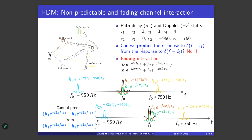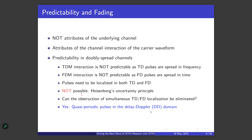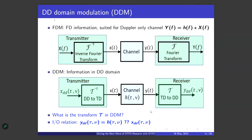In FDM too, we cannot predict the response to an impulse at f₁ from the response to an impulse at f₀. The problem with both TD and FD pulses is that they are localized in one domain but not the other. We need pulses localized in both time and frequency, but Heisenberg's uncertainty principle prevents that. The answer lies in designing quasi-periodic pulses in the delay-Doppler domain.